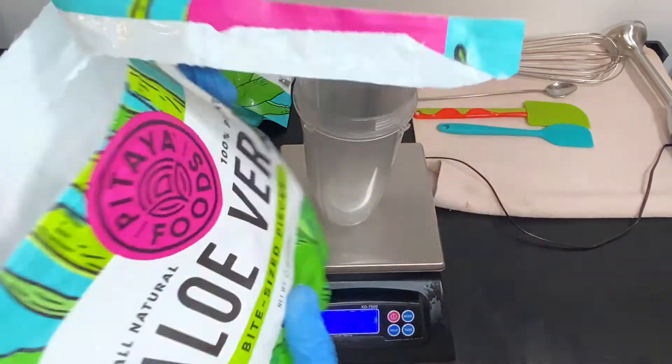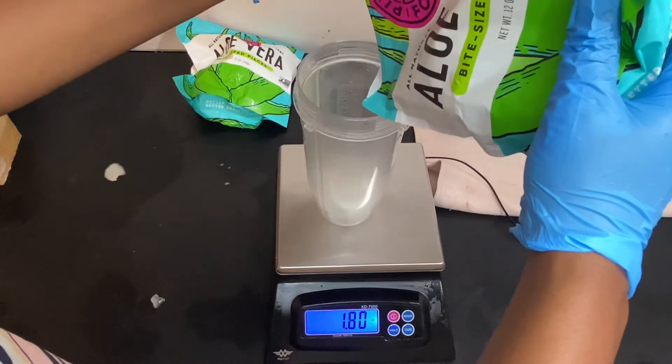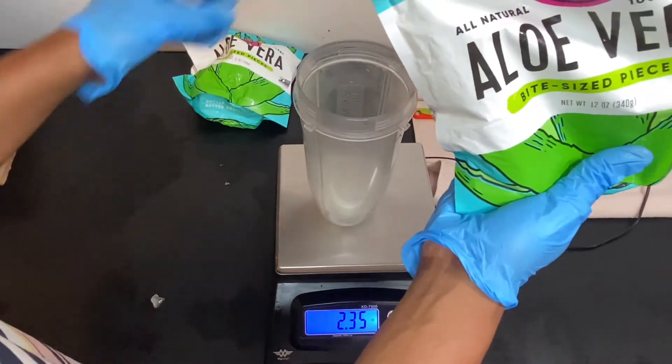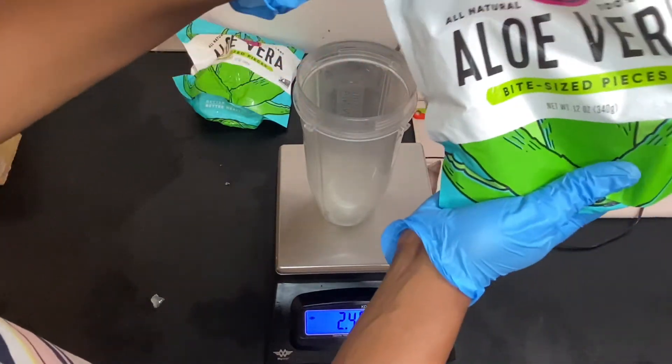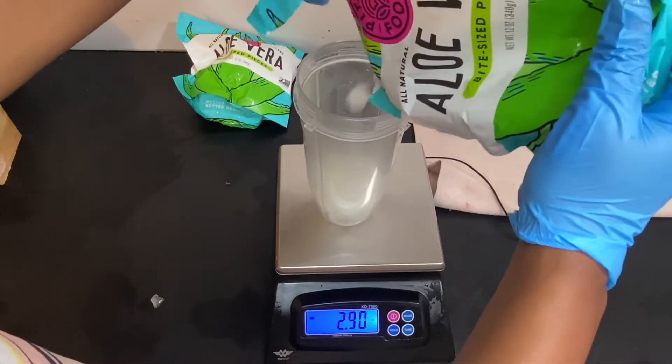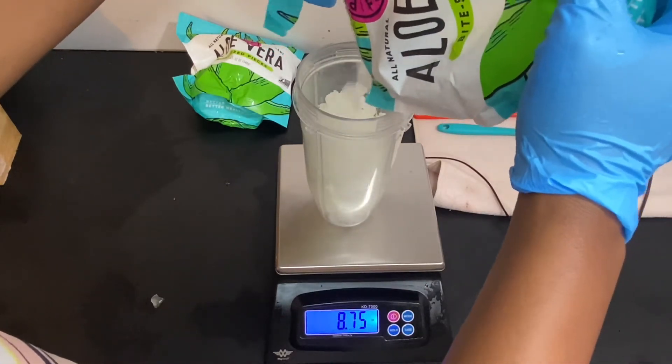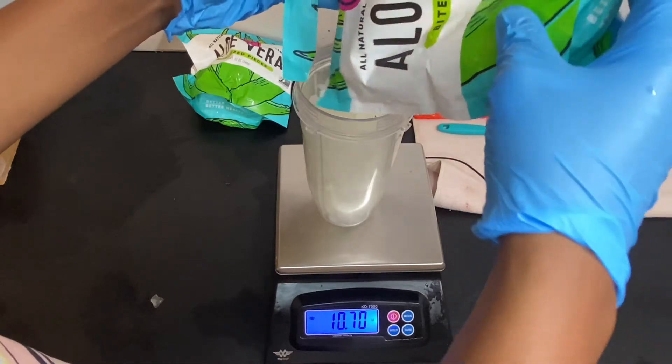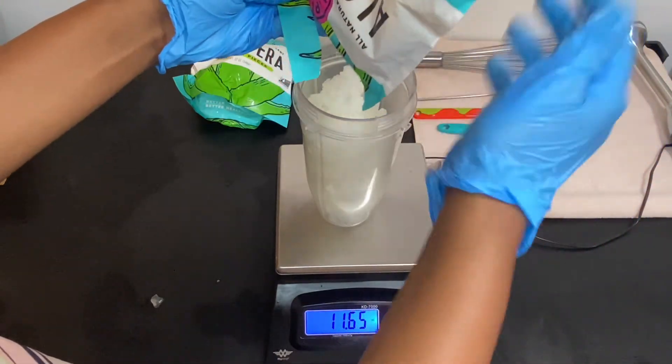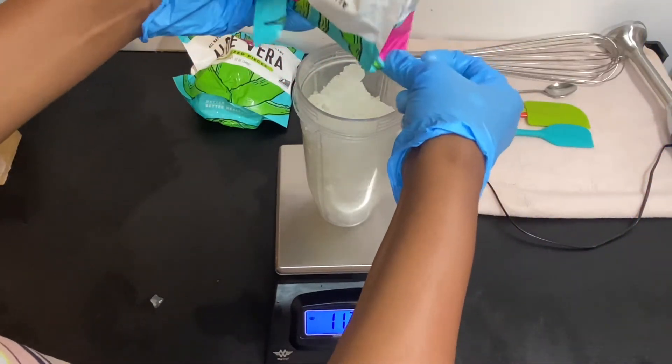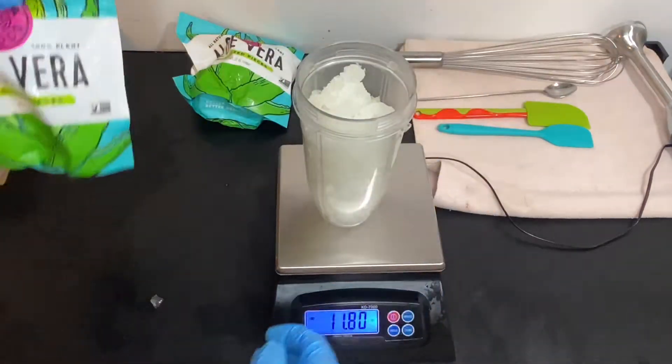So here I am measuring out the aloe into this container. We're going to blend this up. The aloe vera is frozen because we're going to be adding lye to it, and we want a frozen mixture so that the lye doesn't heat up too much.